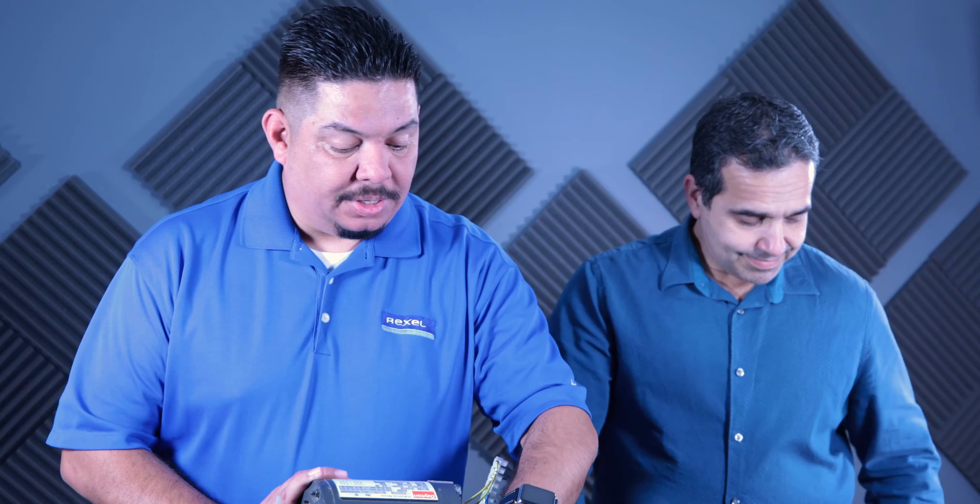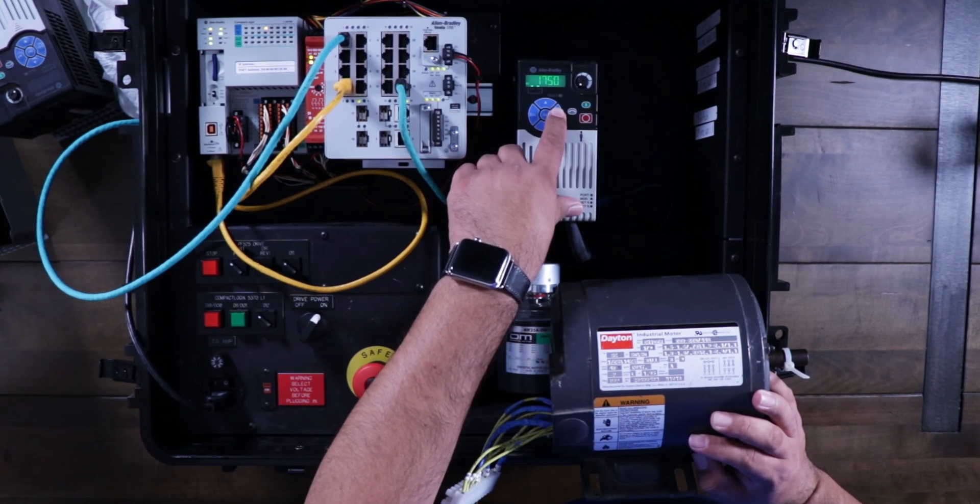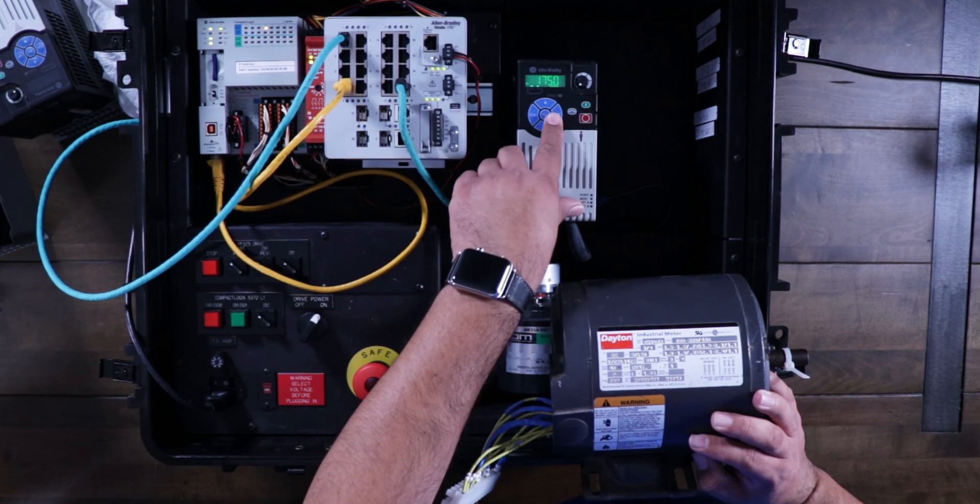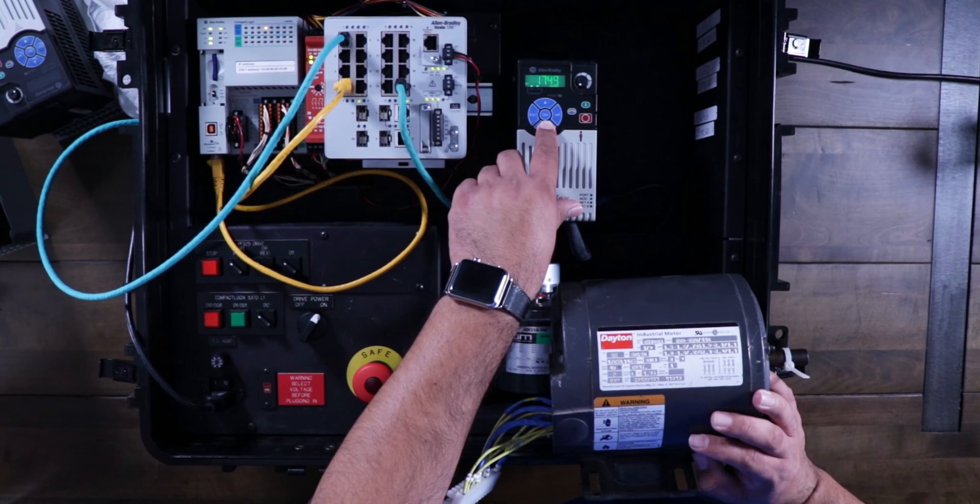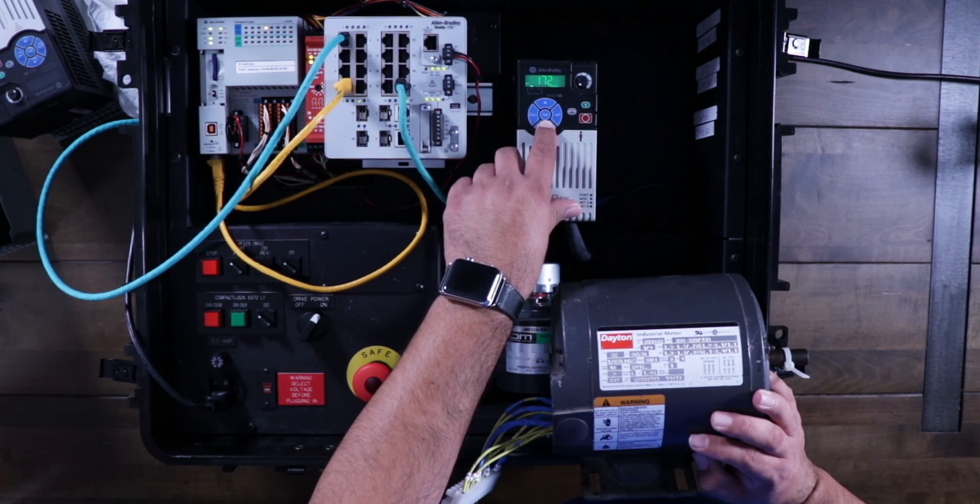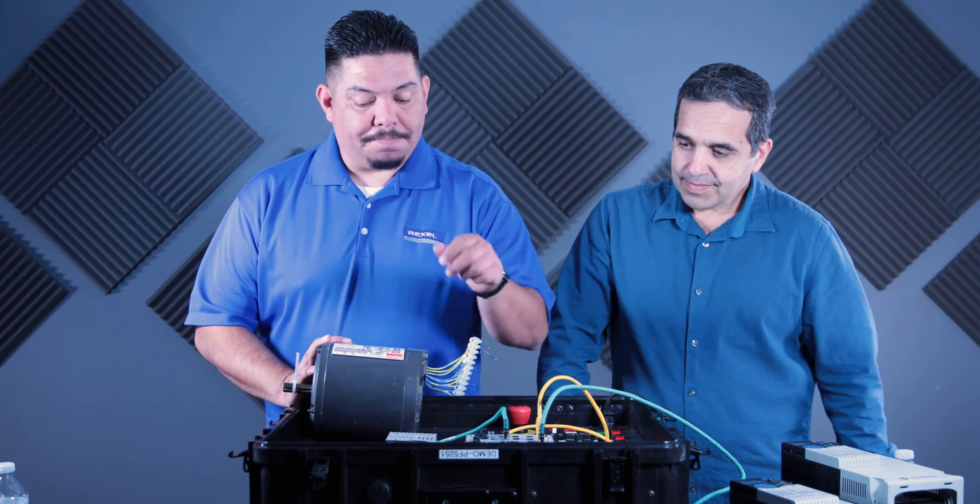Now the RPMs of the motor? So this is a 1725 motor. So that's parameter 36. 1750, we can go ahead and set it to 1725 to make sure we match the motor nameplate data. We're almost there. There we go.